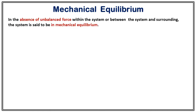The first one is mechanical equilibrium. In the absence of unbalanced force within the system or between the system and surrounding, the system is said to be in mechanical equilibrium. If a system is in mechanical equilibrium, that means there is no unbalanced force present.